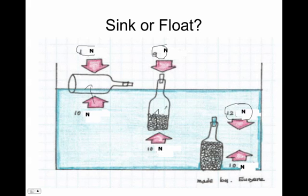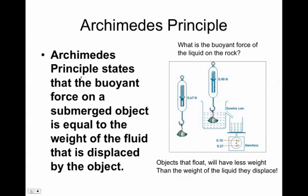Neutrally buoyant would be 10 newtons equaling 10 newtons, and positively buoyant would be less than 10. Here's Archimedes' principle again: the buoyant force on a submerged object is equal to the weight of the fluid it displaced. The rock weighs 0.67 newtons in air; in water the force meter reads 0.4 newtons. The difference is 0.27 newtons, which is both the weight of the displaced water and the buoyant force pushing up on the rock.